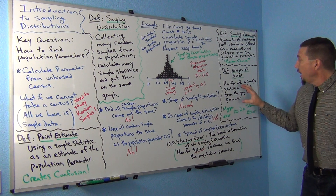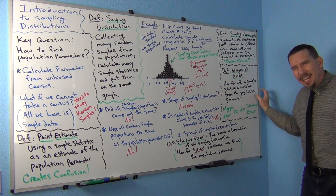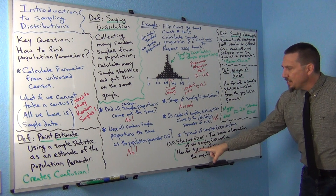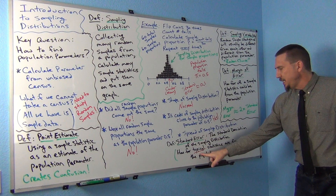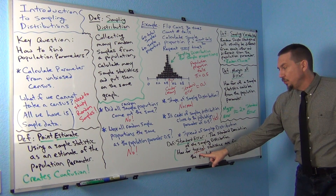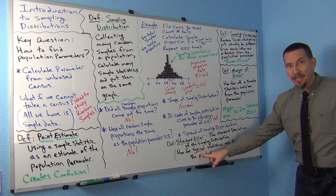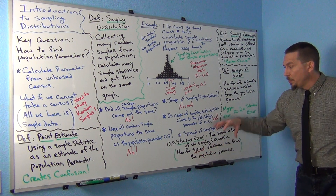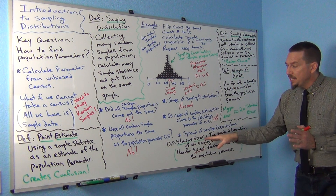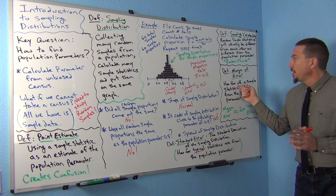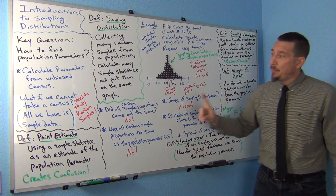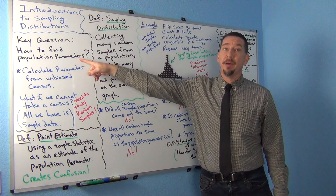In other words, margin of error takes into account any statistic that's not an outlier, while standard error takes into account only typical statistics — only that middle 68%. So think of margin of error as bigger than standard error. But if I can figure out standard error, then maybe I can figure out margin of error, and that's going to tell me how far off my random sample is from the population.